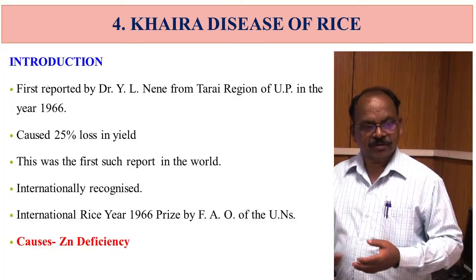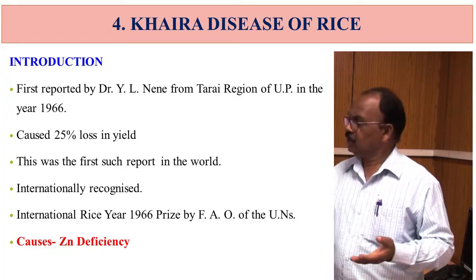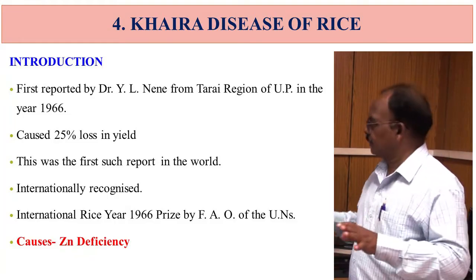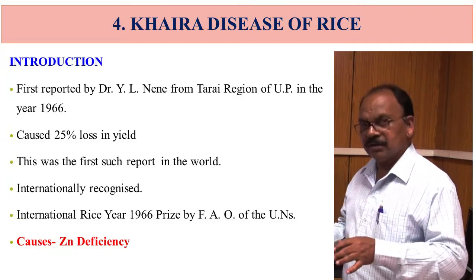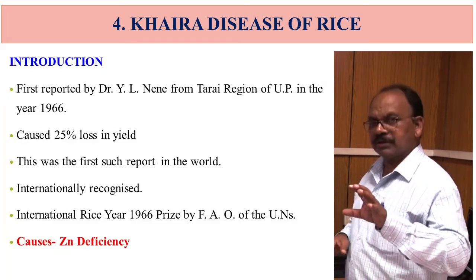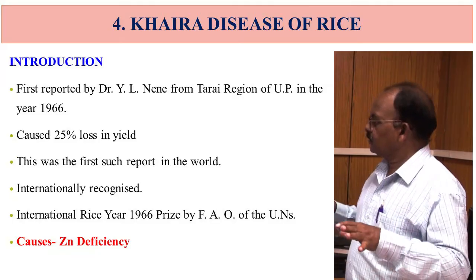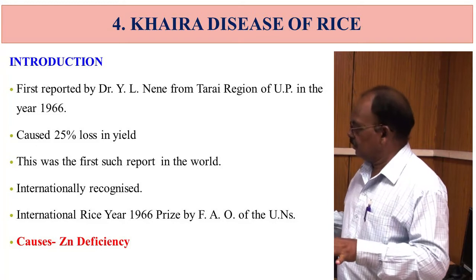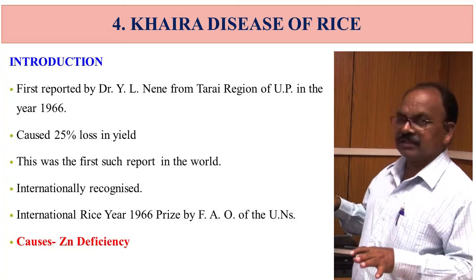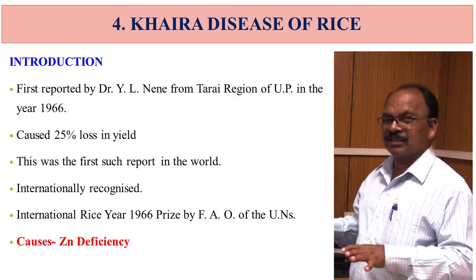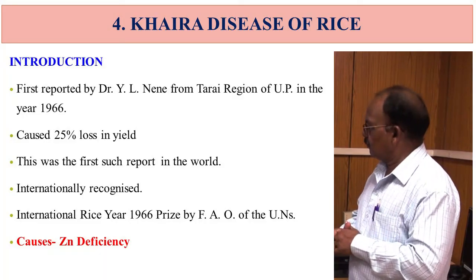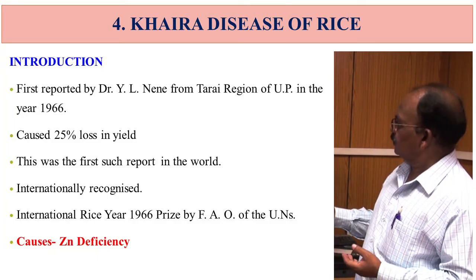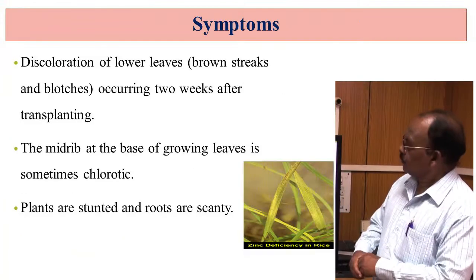The next and most important disease of rice is Khaira disease of rice. This disease was first reported by Dr. Y.L. Nene from the Terai region of Uttar Pradesh in 1966, and caused about 25% yield loss — the first report of its kind in the world. He was internationally recognized and received the International Rice Year 1966 prize by the Food and Agriculture Organization of the United Nations. The disease is caused due to zinc deficiency.